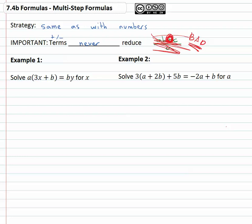If we have any adding or subtracting, we really can't reduce, or we're very limited in how we can reduce and we'll talk about that in a future video. But for now let's look at a formula, it's got lots of variables in it. a times 3x plus b equals by and we're going to solve it for x. We want to get this x alone in the equation.